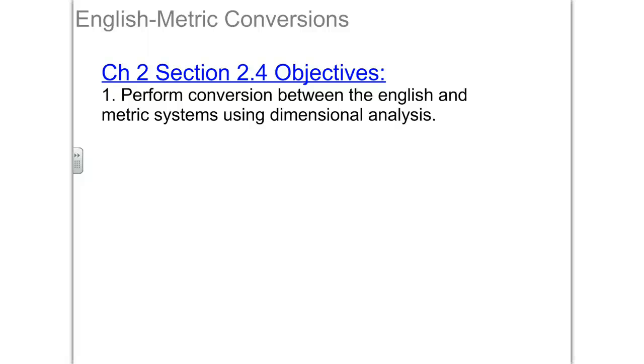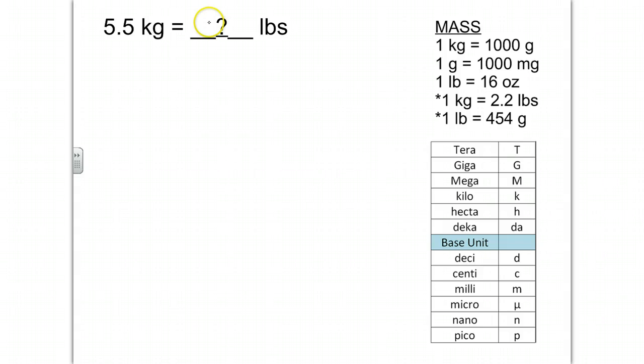We're now going to combine our English and metric conversions together. Here's an example where we're starting out with a metric unit and we're trying to end up on an English unit. Remember that on our list, anything with an asterisk next to it is going to allow us to switch between English and metric.